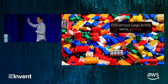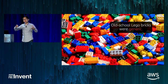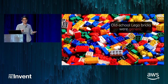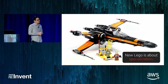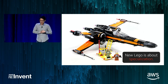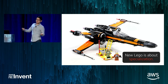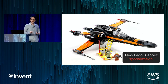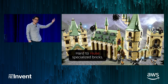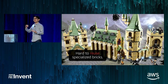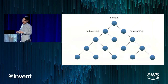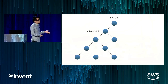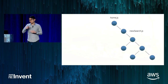Remember those old-school Legos — you'd buy a giant bucket of 1,000 generic pieces and use your imagination to build something. Fast forward a couple decades, and Lego sets are now highly specialized — each set only comes with the pieces you need. It really wouldn't make any sense to bundle Harry Potter bricks with your Star Wars set. That's exactly the same thing we're looking at with our JavaScript bundles: each experience is highly specialized, and we want to make sure you only get the things you need.